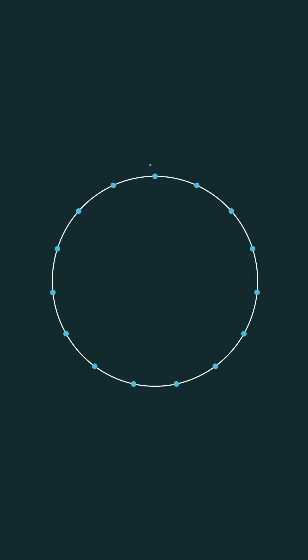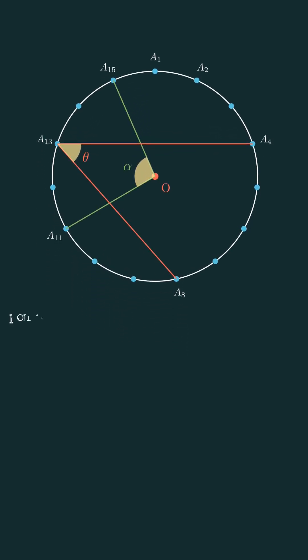Let's draw a circle and mark 15 points on it, spaced equally around the circumference. Next, let's define two angles, alpha and theta, just like you see in the diagram.